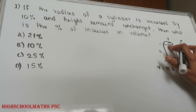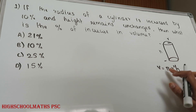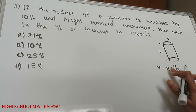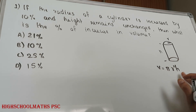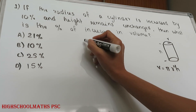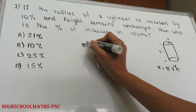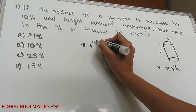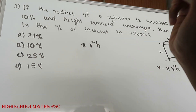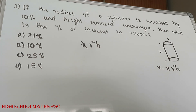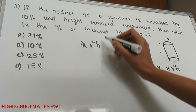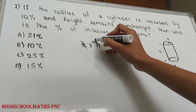We have a cylinder. The volume equation of a cylinder is pi r squared h. Here we have pi r squared h — pi is a constant, there is no change here.